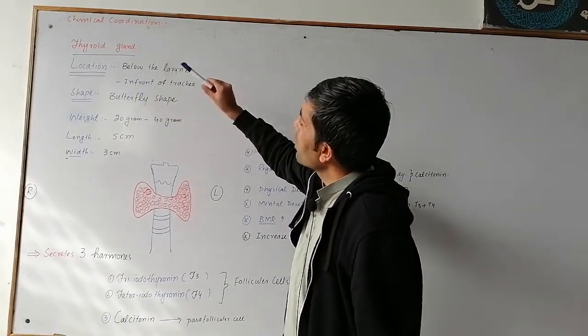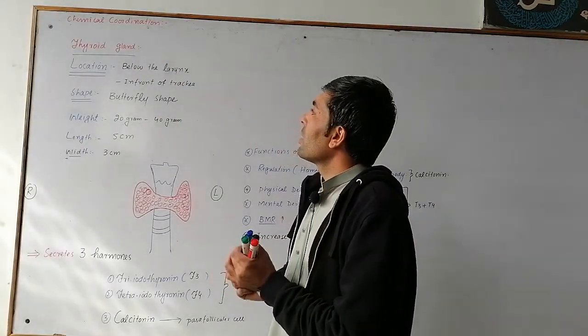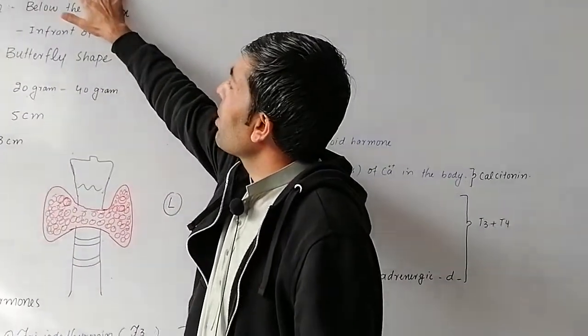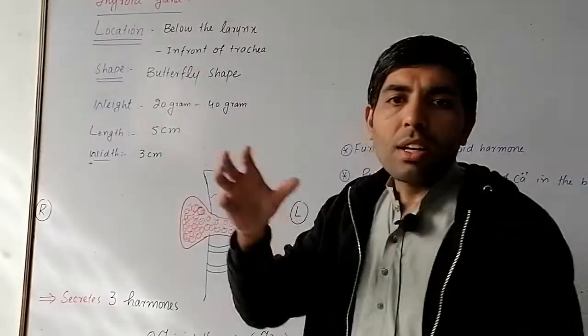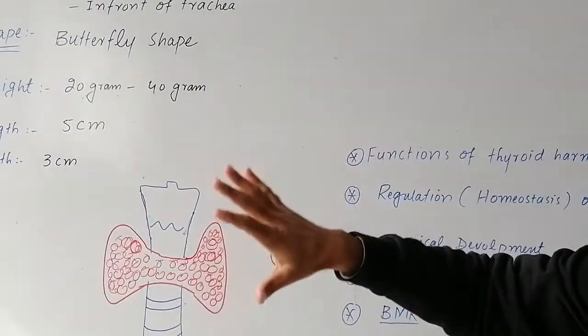Chemical Coordination topic is Thyroid gland. Thyroid gland has less pathology, but it is very simple. Thyroid gland is a function.